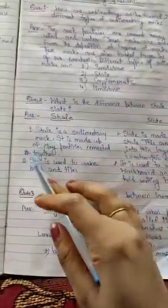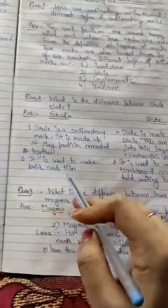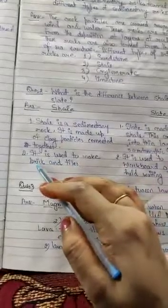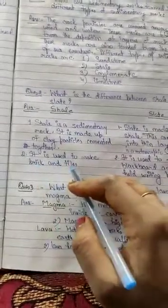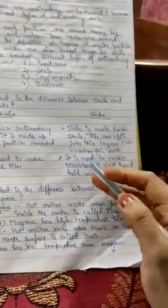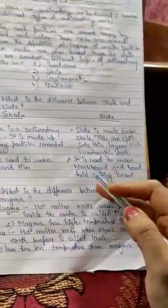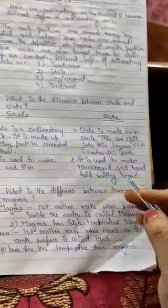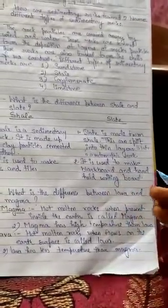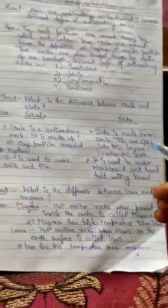Shale is used to make bricks and tiles. We use shale to make bricks and tiles. Brick is used for constructing the building and tiles is used in floorings. Now, slate is used to make blackboard and handheld writing board. Handheld writing board is a kind of slate. And blackboard you all know.